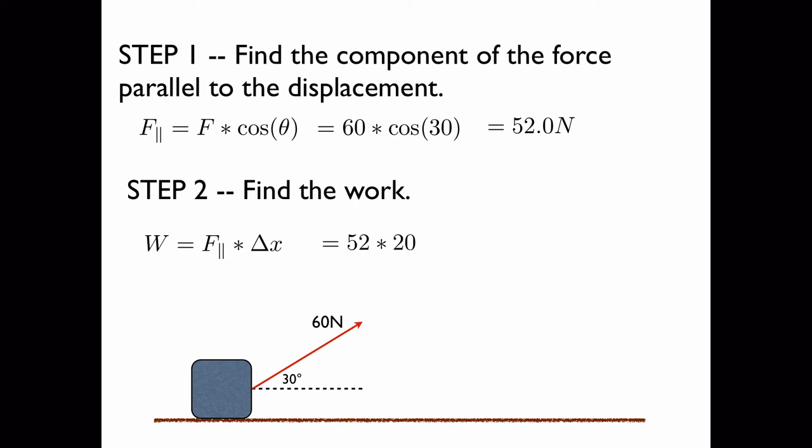Now in the previous slide, it stated that the box is dragged 20 meters along the ground. So we multiply the force parallel to the displacement found in step 1 by 20 meters and we get our result: 1,040 joules.